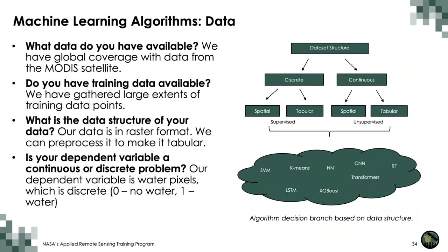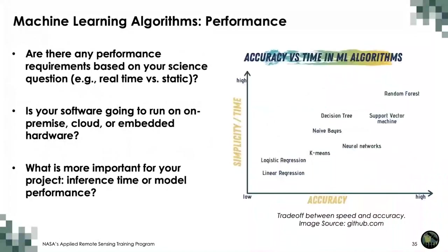For our session one and two use case, the data available is global coverage MODIS satellite data across several temporal windows. We do have training data available: large extents of training data points quantifying water extent over the surface. The data structure comes in raster format, which we can preprocess and perform feature engineering on to convert it into tabular format. Our dependent variable — water pixels — is discrete, discretized as 'no water' and 'water.' So we have a binary classification problem.